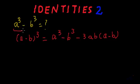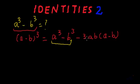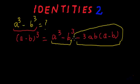Now, the identity for which we are doing the derivation is a cube minus b cube. So if we add 3ab multiplied by a minus b to both sides of this equation, this term will get cancelled, and we will get a cube minus b cube on the right hand side.